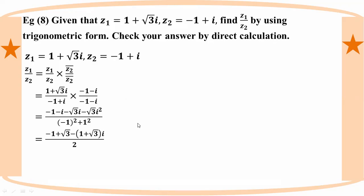Now we have the imaginary part. The result is: (root 3 minus 1) by 2, minus (1 plus root 3) by 2 · i.